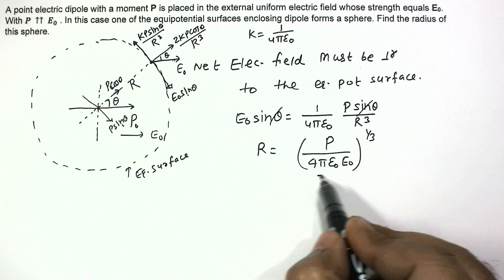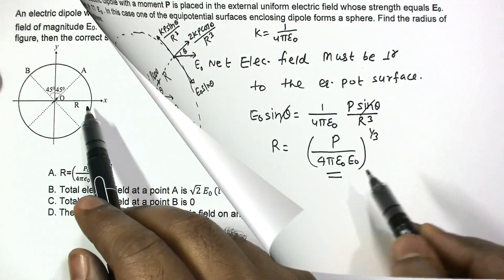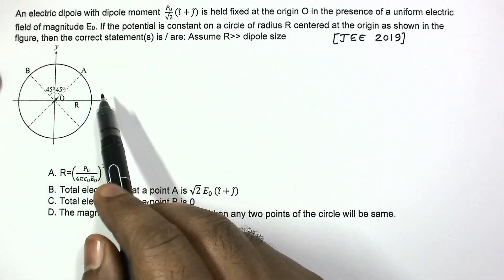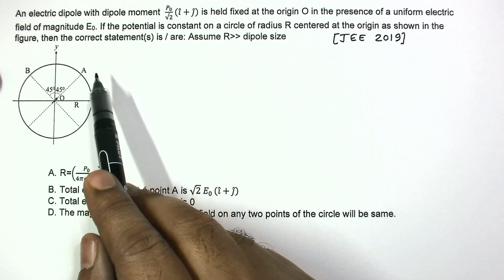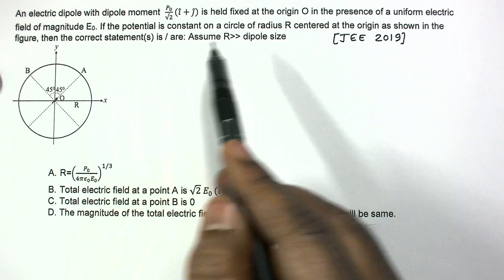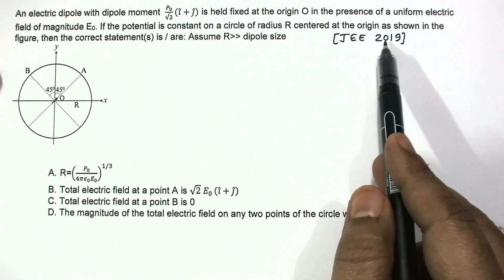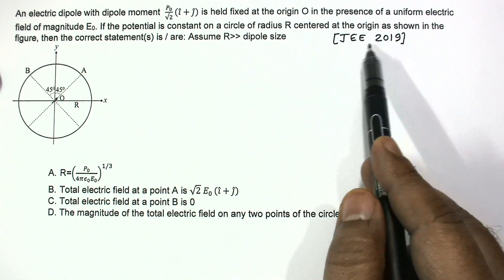Cancelling sinθ, the radius comes out as r = (p / 4πε₀E₀)^(1/3). So this is the final answer. This question was asked in the JEE 2019 Advanced examination.